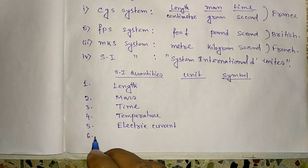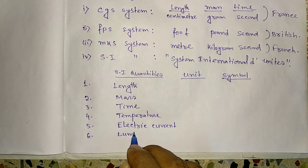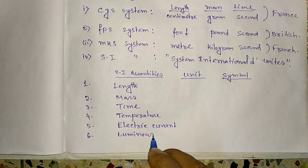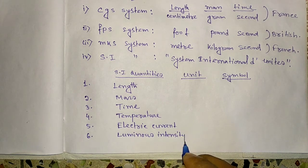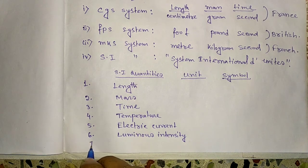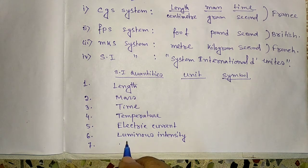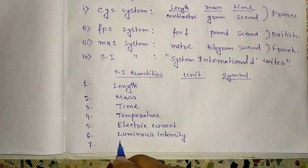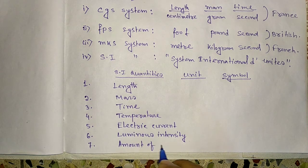Number six, is luminous intensity. Number seven, is amount of substance.